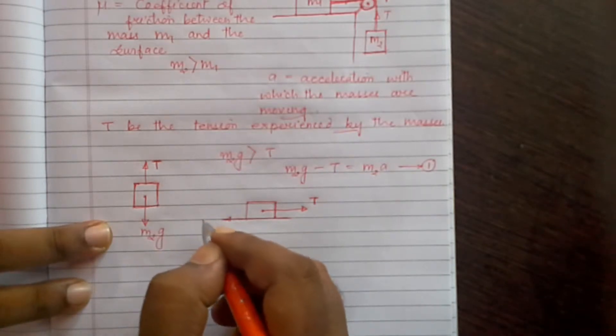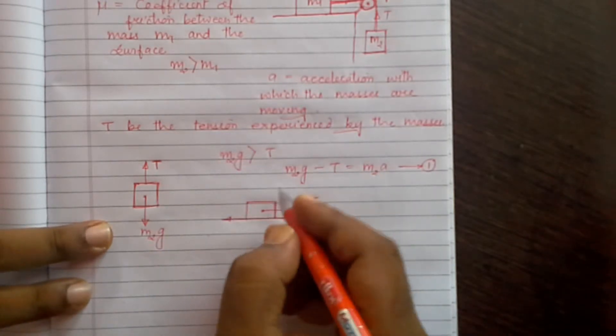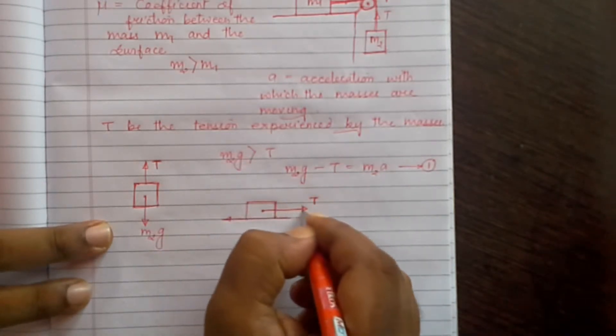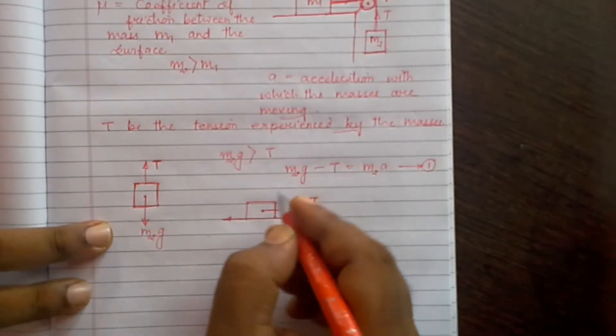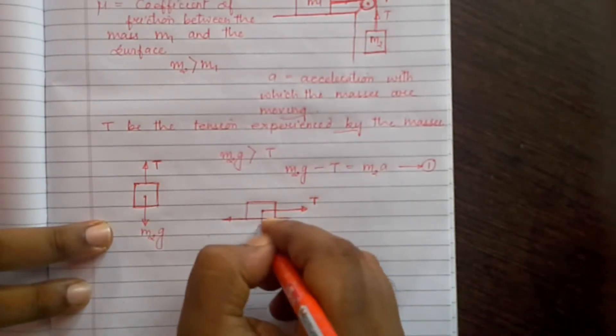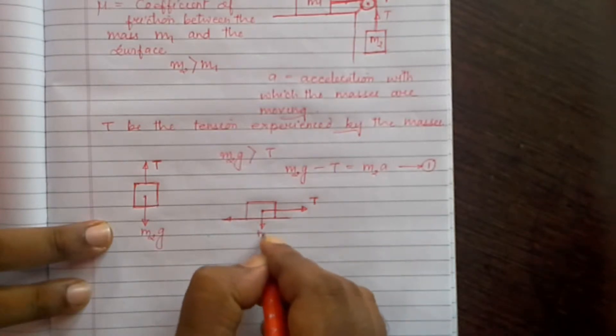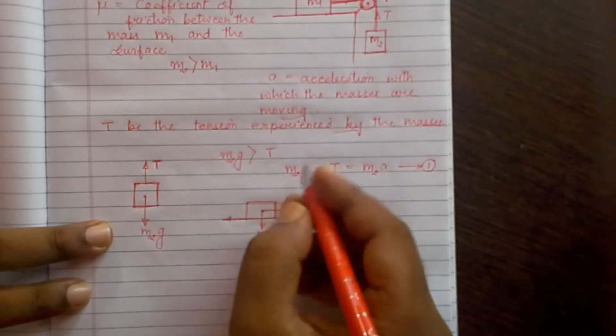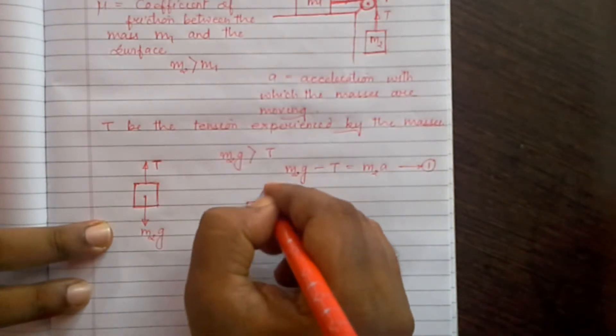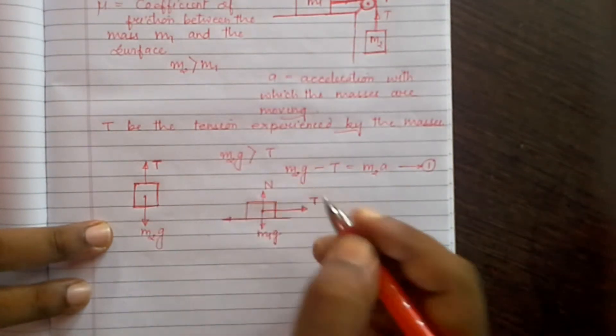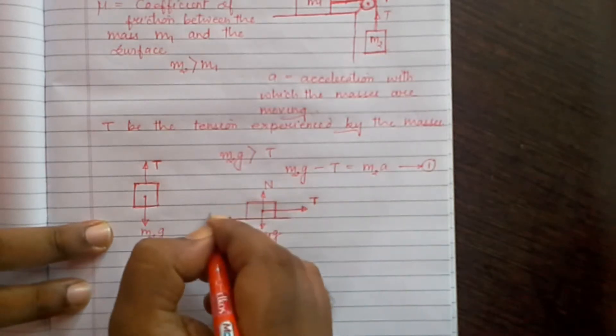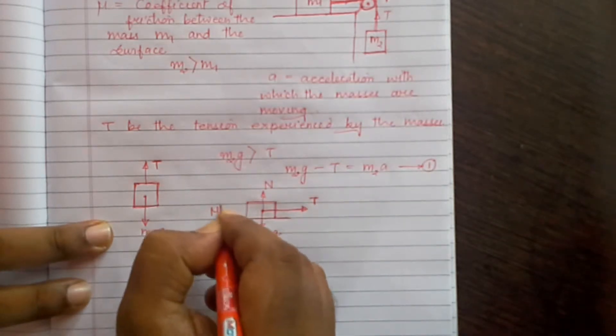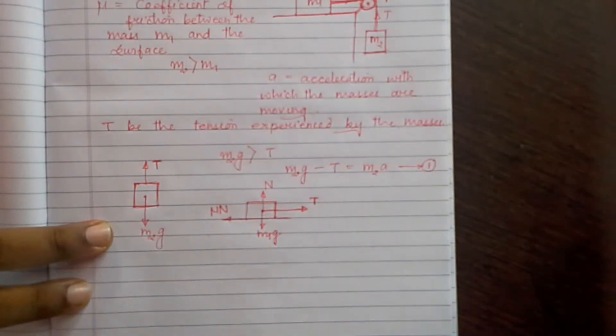So due to the normal force, a force of friction acts in the backward direction which will be equal to mu times N, where mu is the coefficient of friction.